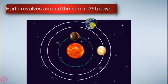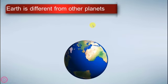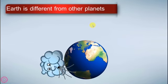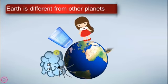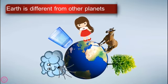Earth is different from the other planets. How or why? There is air, water, humans or animals, or we can say living things, and plants. This makes Earth different from the other planets.